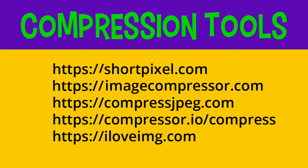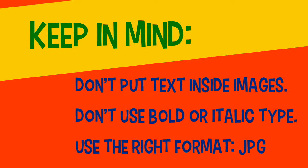Here are some other recommended compression tools, and they all work pretty much the same way — you simply drag your image into the box and wait for the compression. Don't put text inside images; text is not searchable when it's embedded in an image. Image titles in bold or italics are going to slow down your web page speed, so stick to regular print. Remember to use the right format, which is JPEG. You can use PNG — it's a better resolution, but it's a much bigger file and it's going to reduce your page speed.